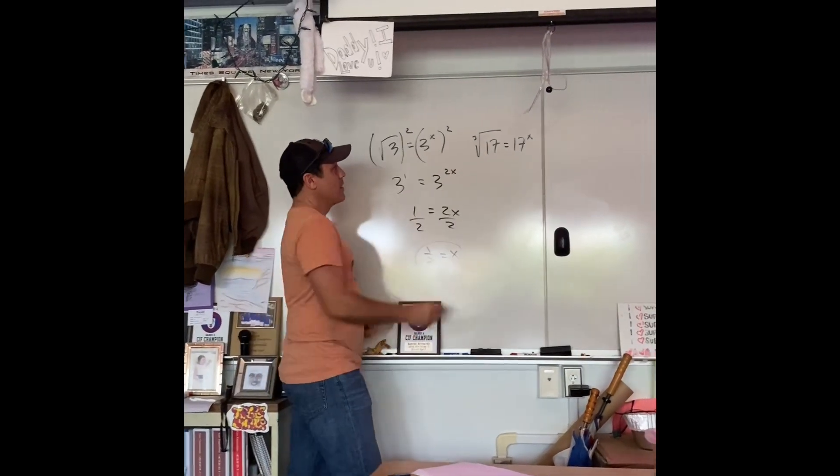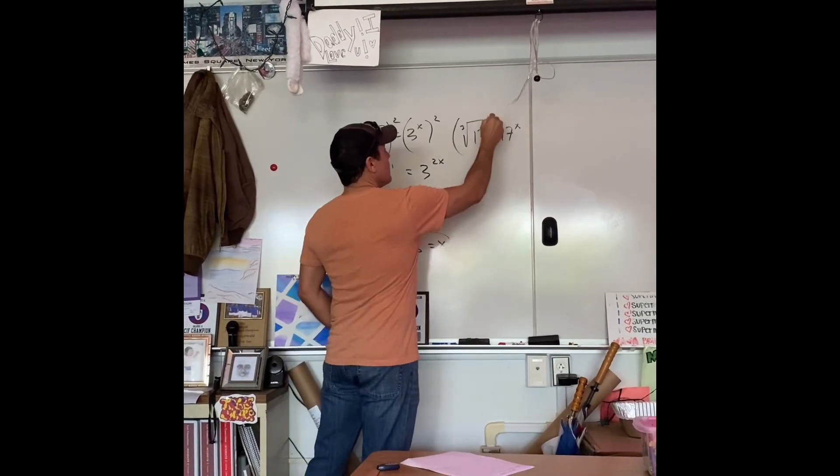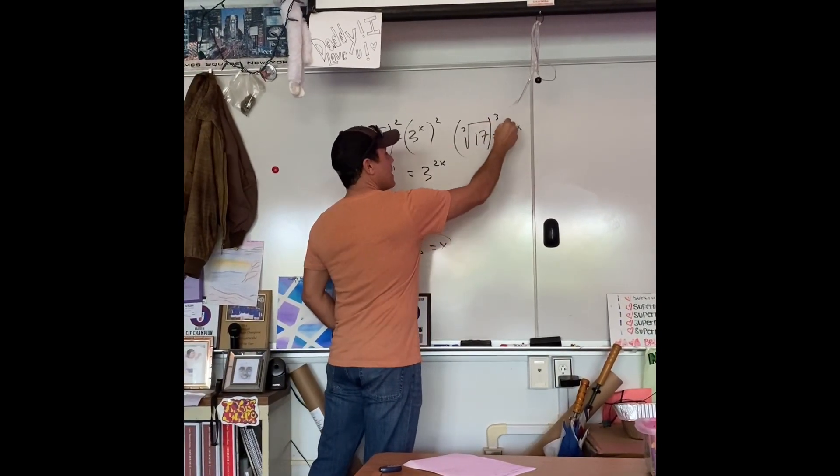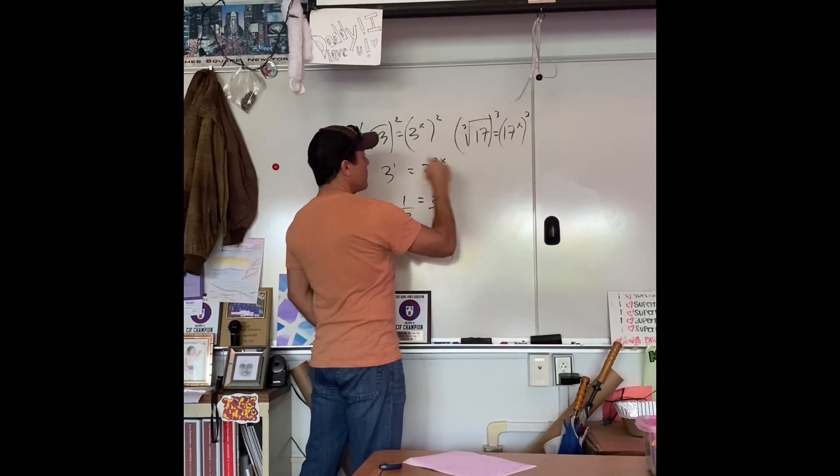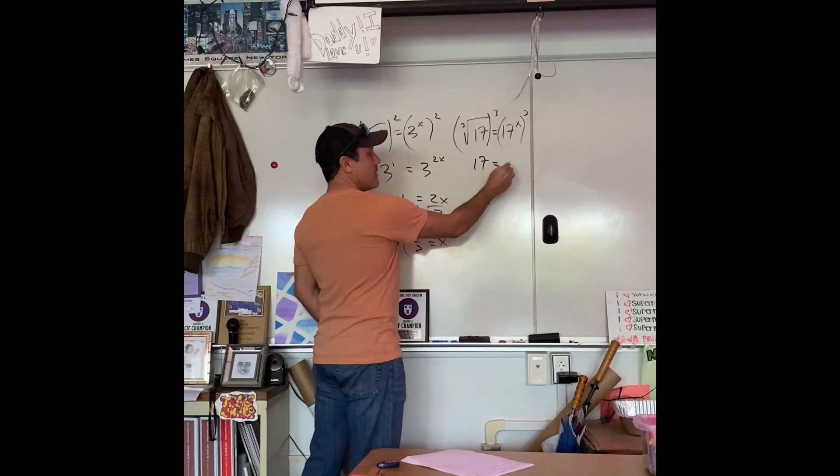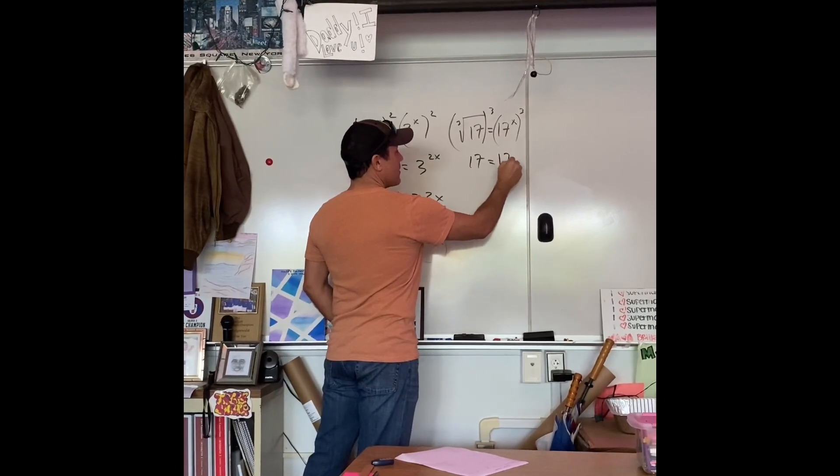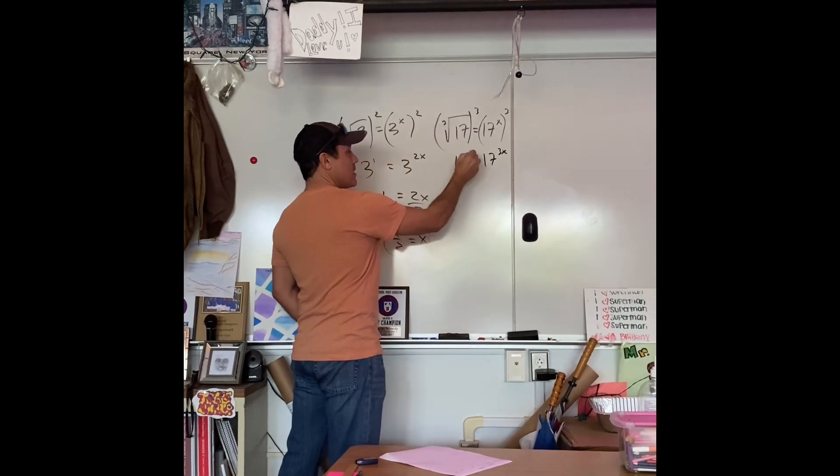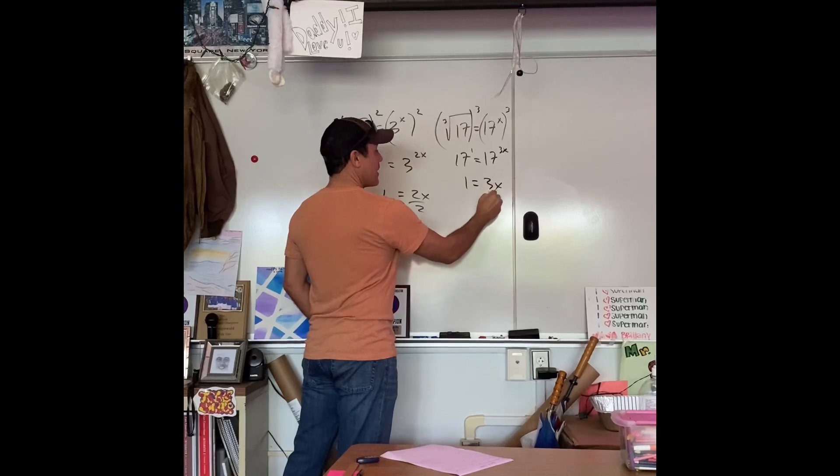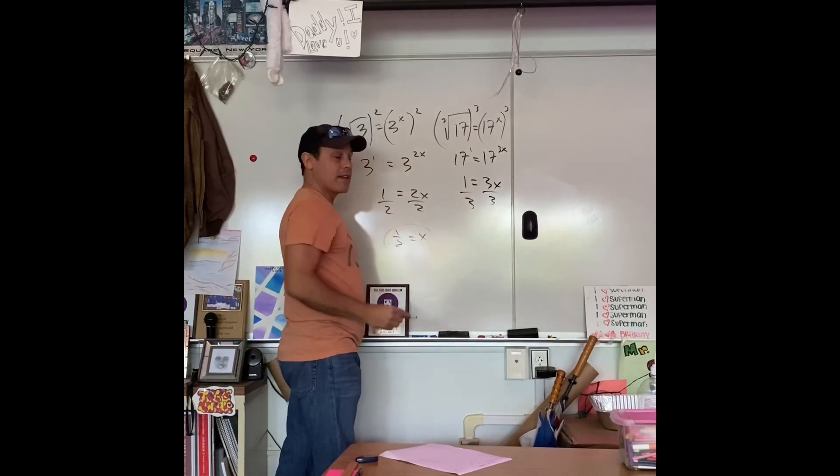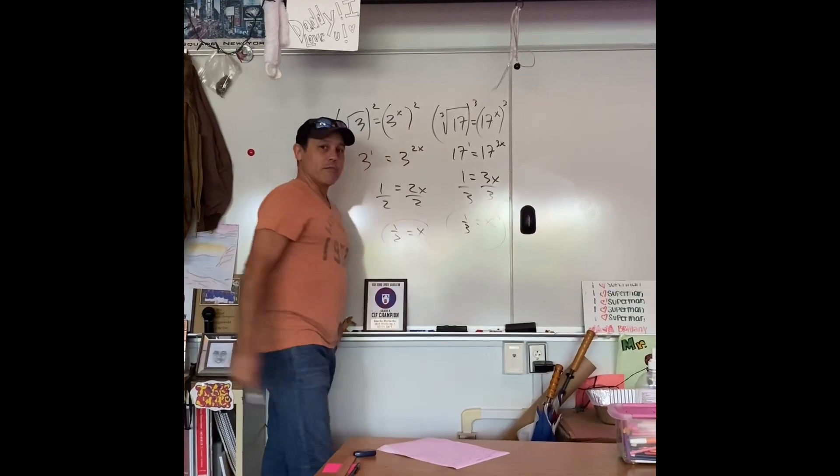Let's do this one. How do you get rid of a cubed root? That's right. You cube it. Well, if you cube the left side, you've got to cube the right side. Cubing a cubed root, boom, you get 17. 17, we've got to raise to the third, so it's 17 to the 3x. There's that magical mystery 1 there. 1 equals 3x. Divide both sides by 3, and you hit the home run.